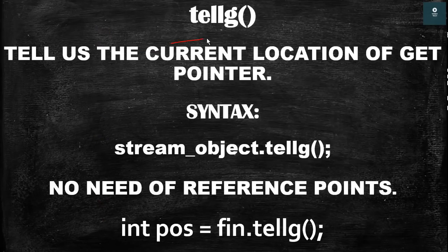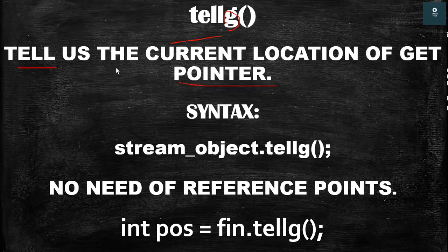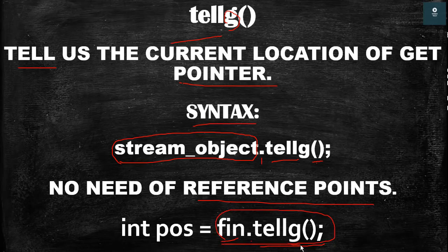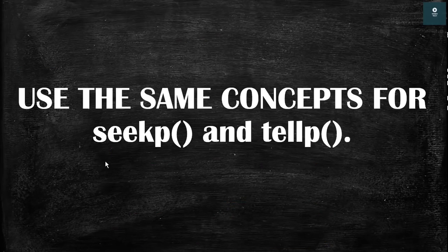The tellg function is a simple function that tells us the current location of the get pointer — the 'g' stands for get pointer. The syntax is: write the stream object, then a dot, then the tellg keyword, and two brackets. After execution, tellg returns the current location of the get pointer, which is stored in an integer variable such as pos. seekp and tellp have the same functionality as seekg and tellg.